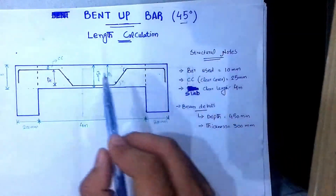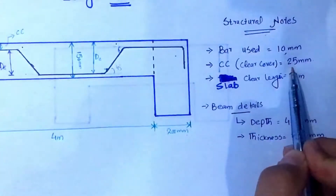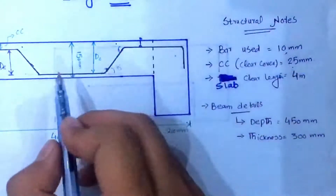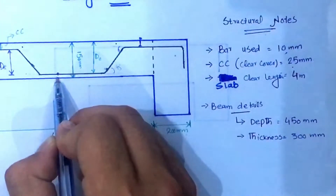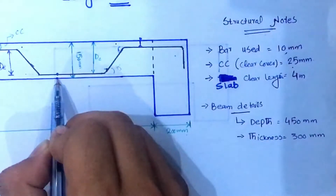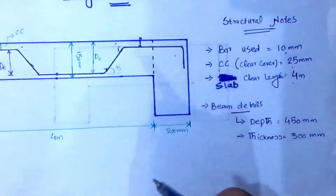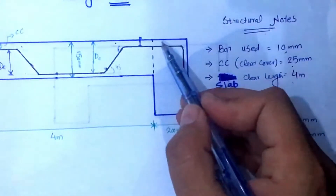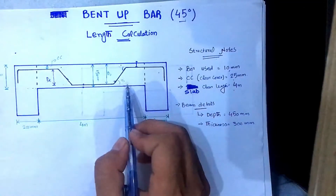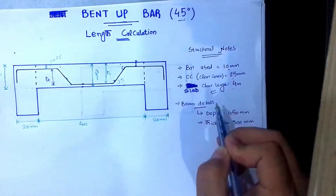The slab details are as follows: the bar used is 10 millimeter, the clear cover is 25 millimeter. Clear cover is the distance between the outer face of the slab and this bar. The slab clear length is 4 meters. Clear length means the distance between the faces of the two beams on which the slab rests — we also call it the clear span.